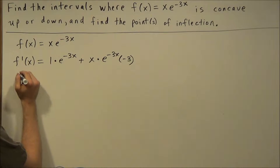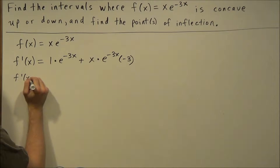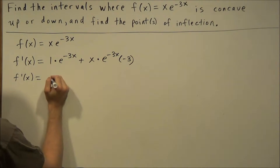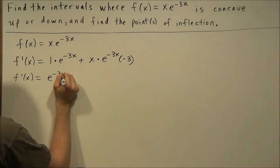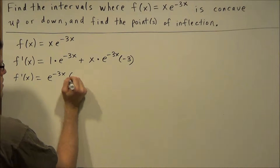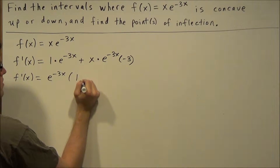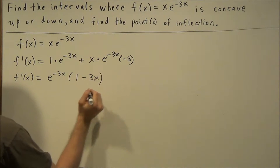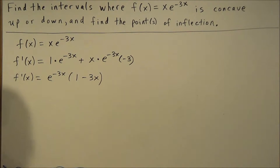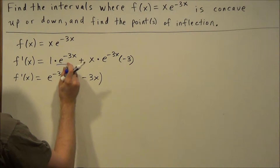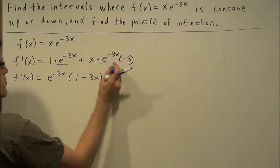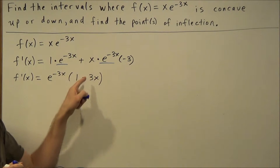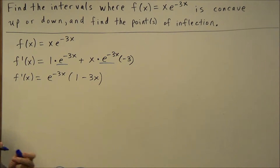So we'll clean this up a bit. f prime of x equals — we can factor out an e to the negative 3x and we're left with 1 minus 3x. Notice that if we factor out the e to the negative 3x we're left with positive 1, and then we have negative 3 times x which gives us negative 3x.